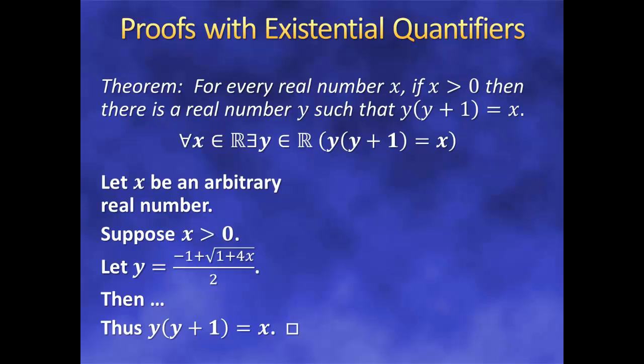Now, when we write our proof, we begin like this: 'Suppose x > 0. Let y = (−1 + √(1+4x)) / 2,' and then we continue with the rest of the proof, showing our steps to transform y(y+1) into x. Notice that, looking at the proof, it's as if we pulled y out of thin air. When we're writing an existence proof, how we came up with the particular value that works isn't actually part of the proof itself — all that matters is that we found it. Keep this in mind when reading a textbook and you see an existence proof that seemed to magically pull a complicated value out of a hat — chances are the authors did exactly what we just did and merely left out how they came up with that value.